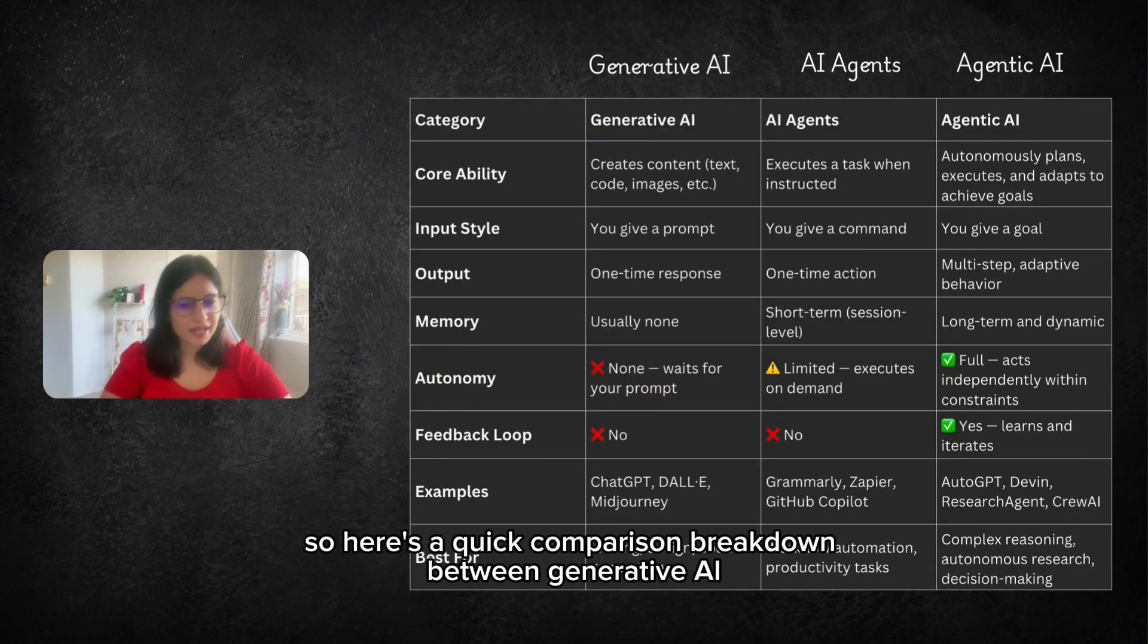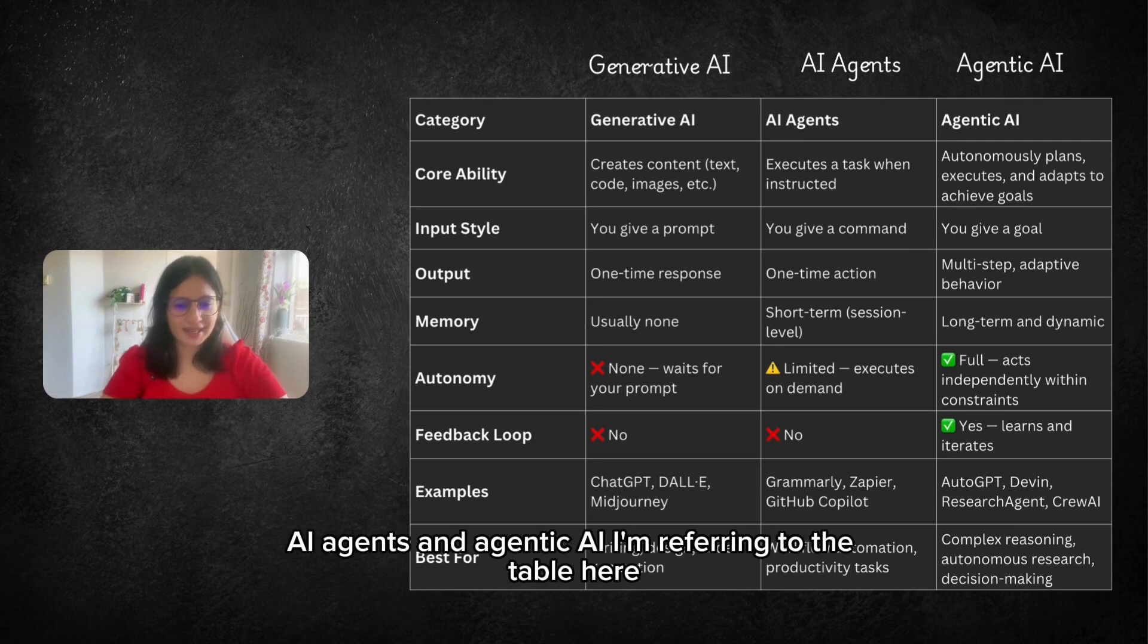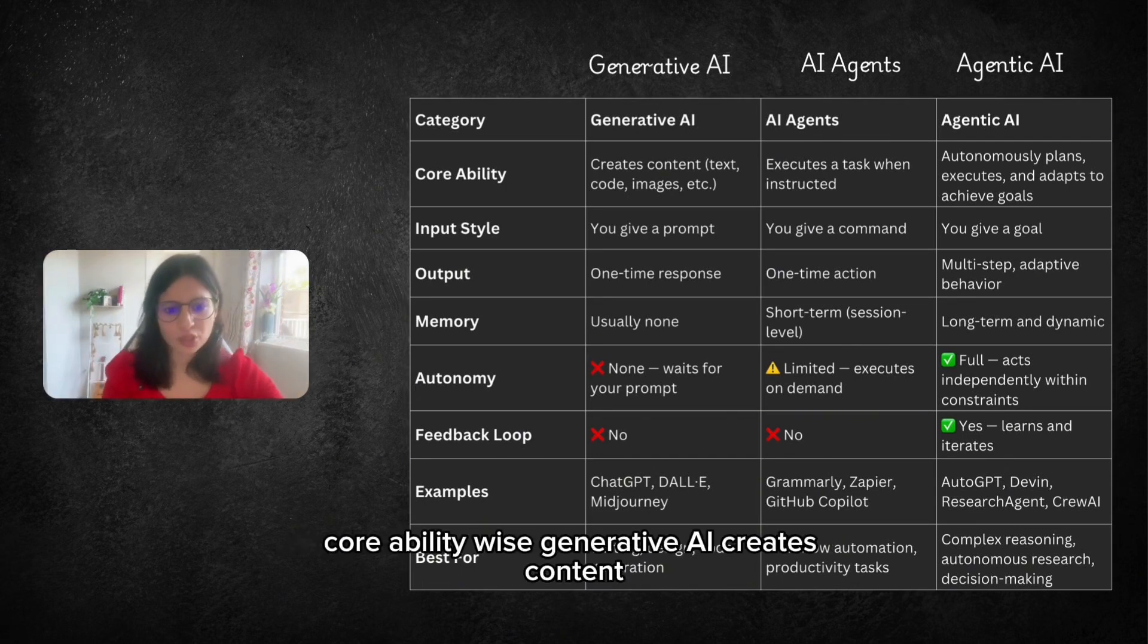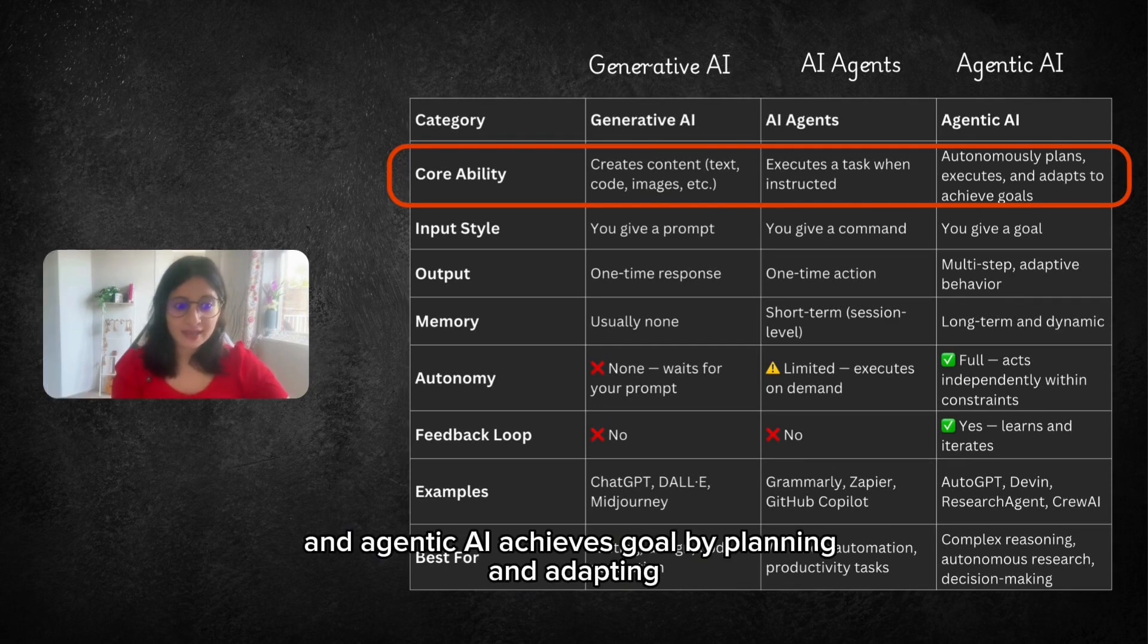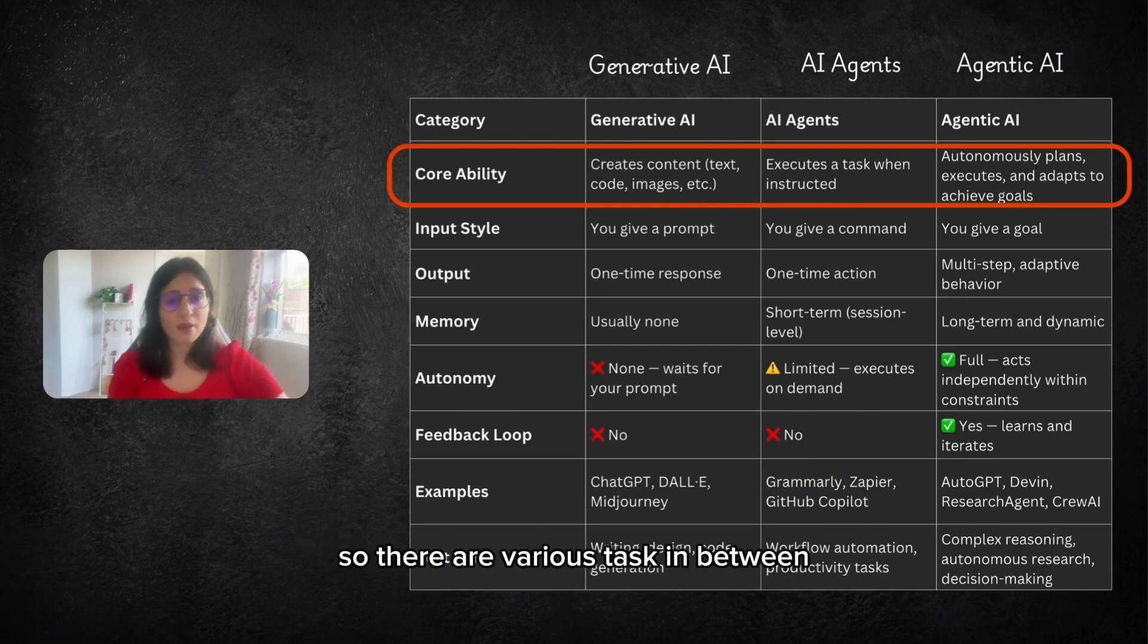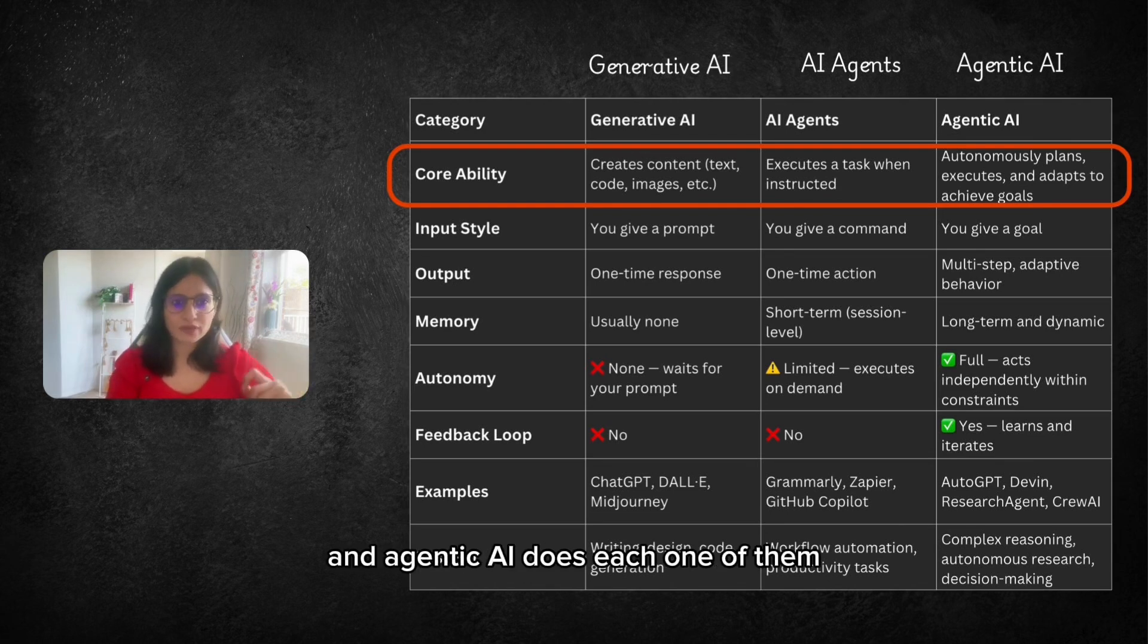So here's a quick comparison breakdown between Generative AI, AI Agents and Agentic AI. I'm referring to the table here. Core ability wise, Generative AI creates content whereas AI Agents executes one task or instructions at a time and Agentic AI achieves goals by planning and adapting. So there are various tasks in between and Agentic AI does each one of them.